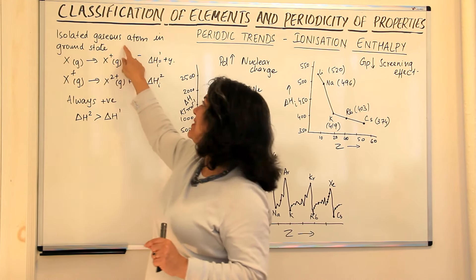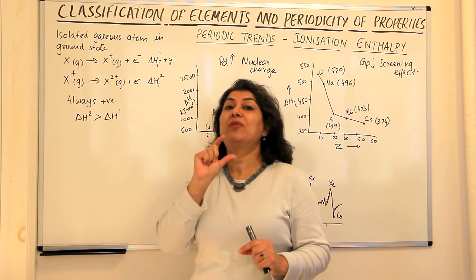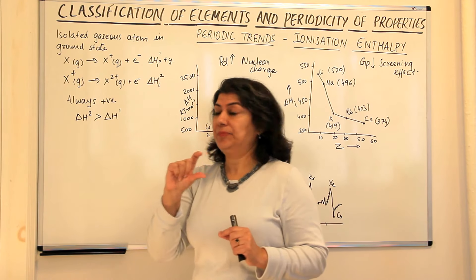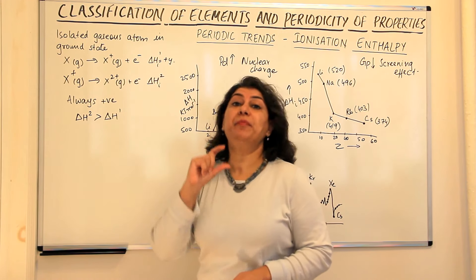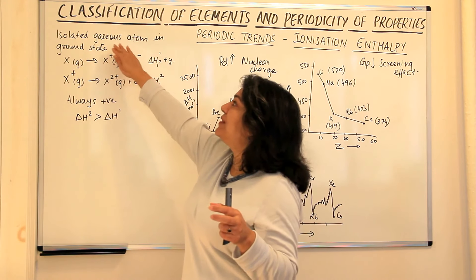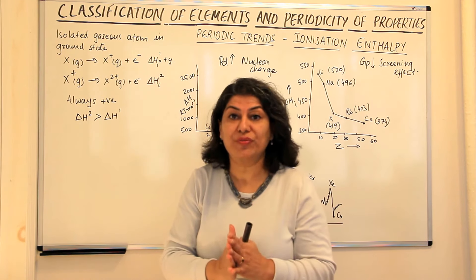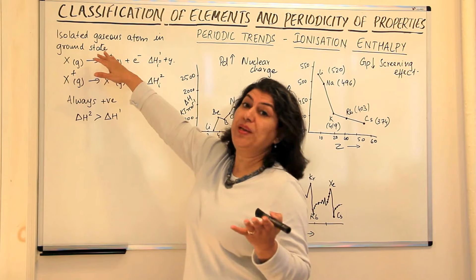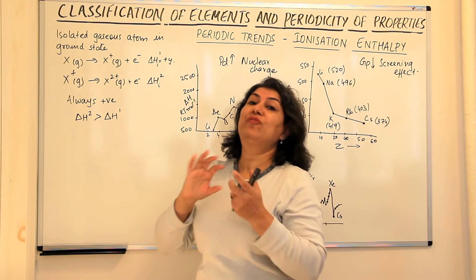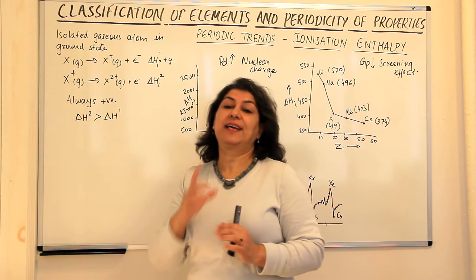Why isolated? Why gaseous and why in the ground state? Because we only want to measure the amount of energy required to remove that electron. If it was not in the gaseous state, we would have to use energy to overcome the attraction of the atoms among themselves. It should be isolated because you want a single atom — you don't want other atoms affecting it. And it should be in the ground state for the first ionization enthalpy.